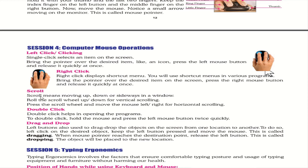Scroll moves up, down, or sideways in a window — roll the scroll wheel up or down for vertical scrolling. Double-click opens programs — press the left mouse button twice quickly. Drag and drop uses the left button — keep it pressed, move the mouse to drag the item, then release to drop it.